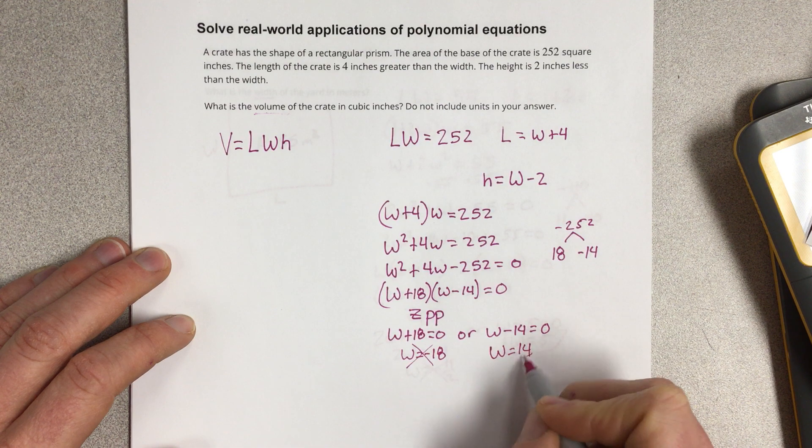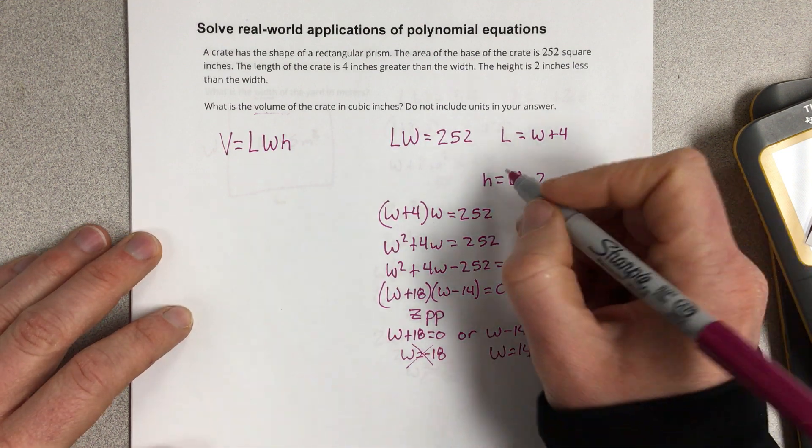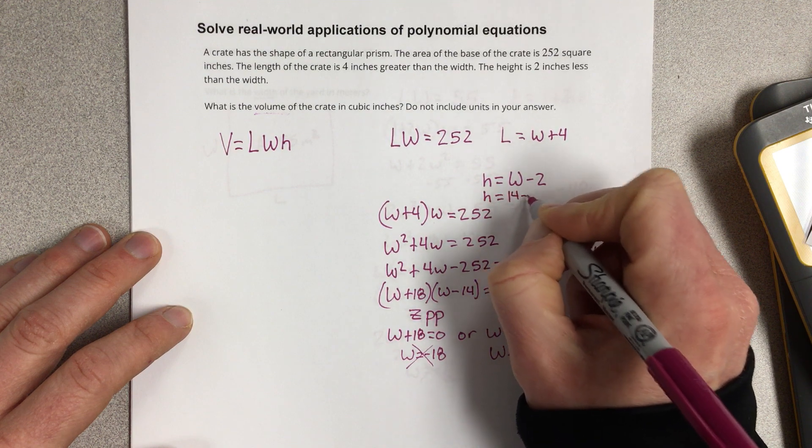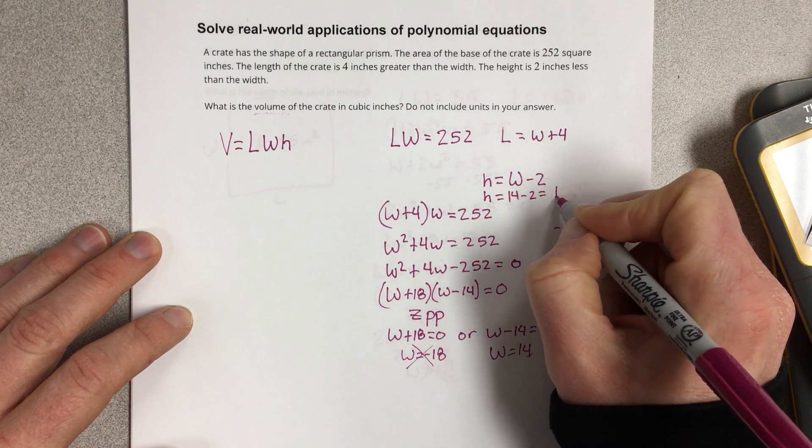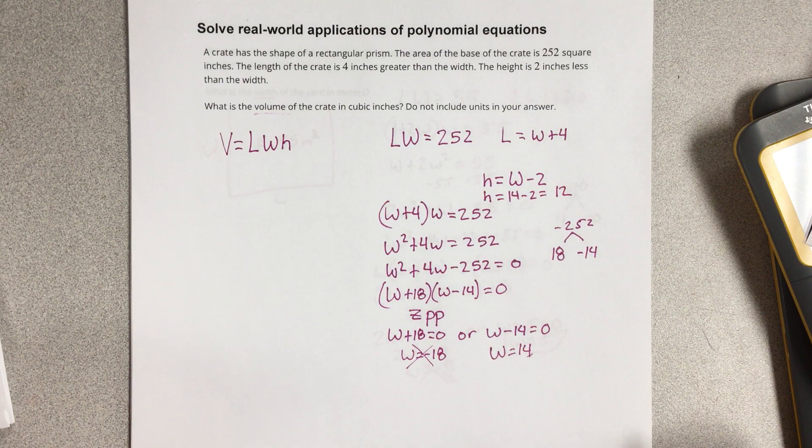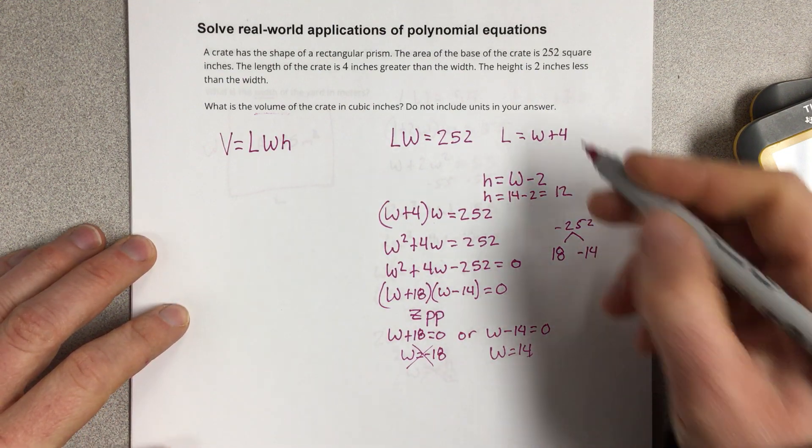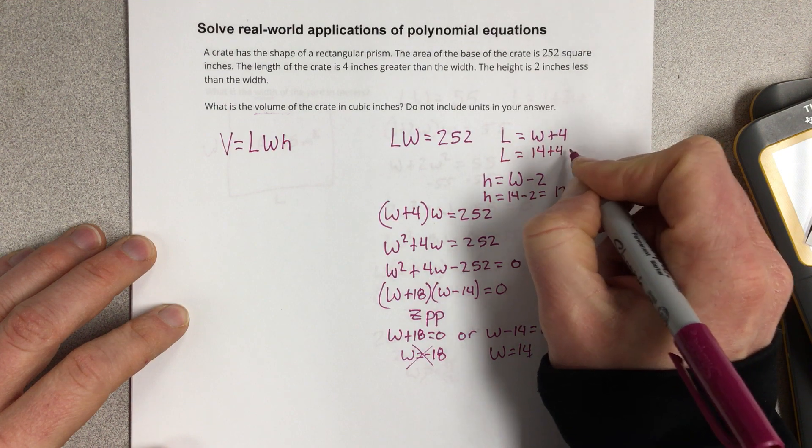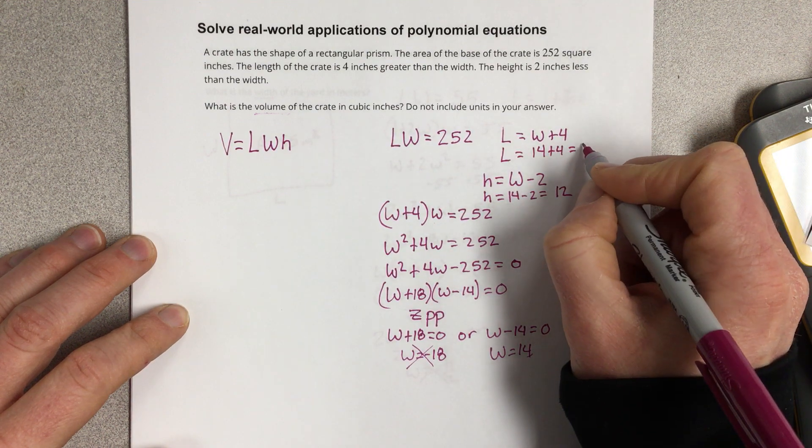So our width is 14, which I can now use to find the height by doing H equals 14 minus 2. So that's 12. So then I can find the length by also doing 14 plus 4, which is 18.